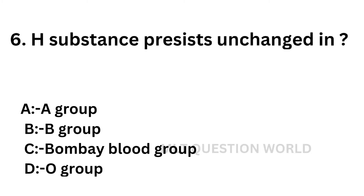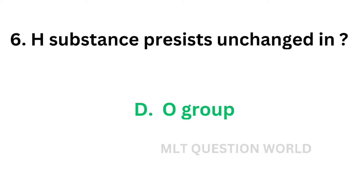Question number 6: H substance persists and is changed in — option A: A group, option B: B group, option C: Bombay blood group, option D: O group. The H substance is produced by the H gene and is a precursor of A and B antigens. For O group individuals, they have H antigen on the surface of their red cells. The correct answer is O group.